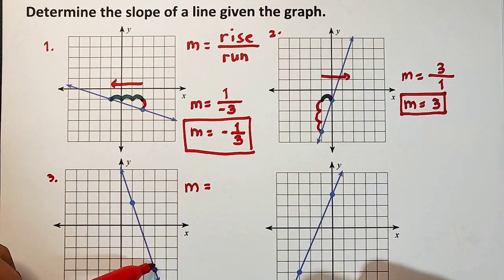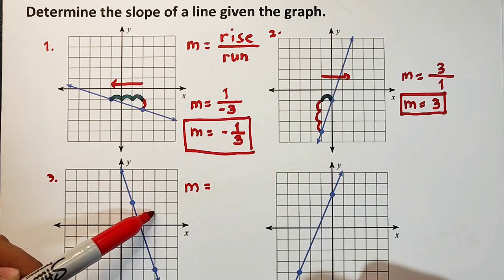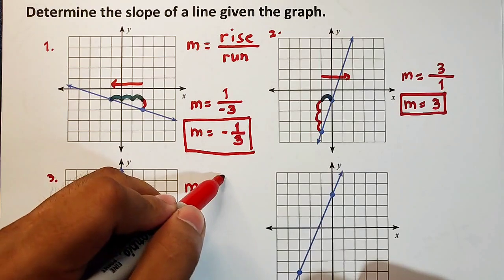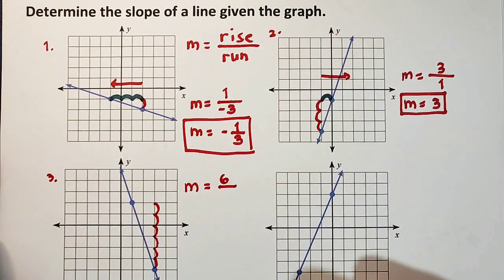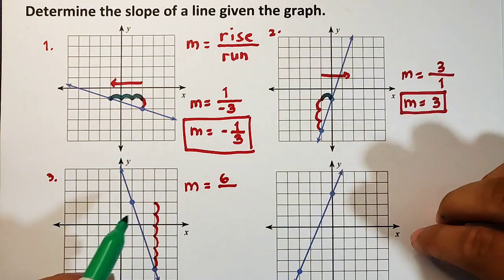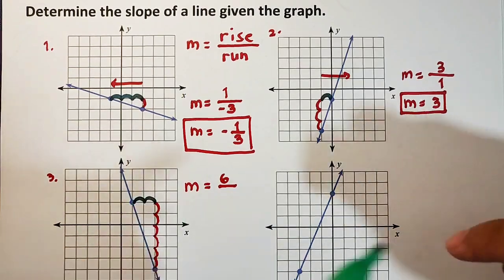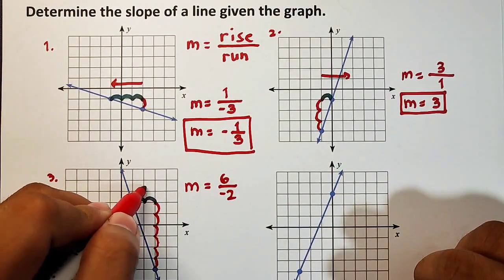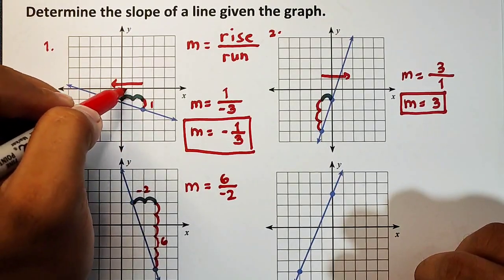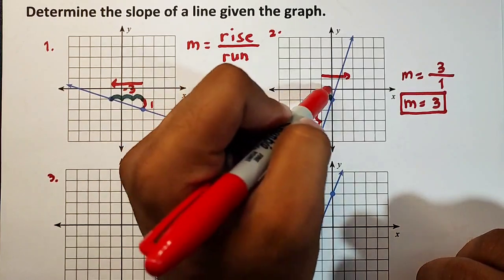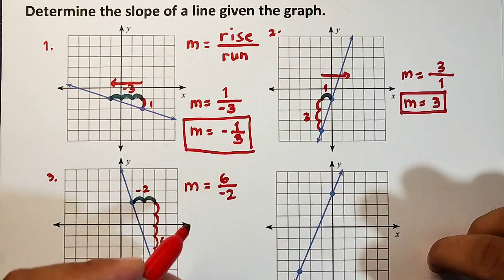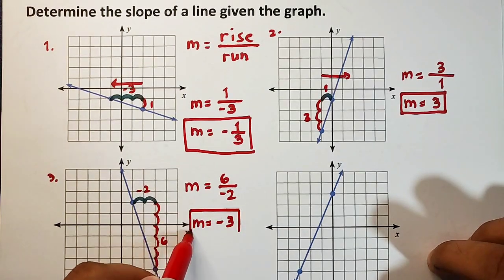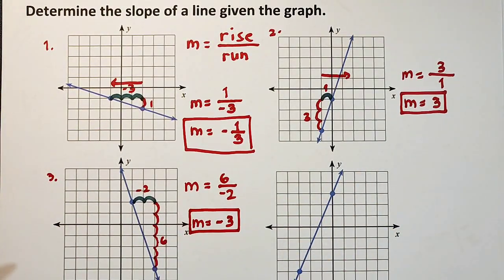For number three, let's find the rise first: one, two, three, four, five, six — rise equals six. For the run, we go from right to left, so it is negative: one, two — run equals negative two. So m equals six over negative two, which equals negative three. This falls under negative slope.